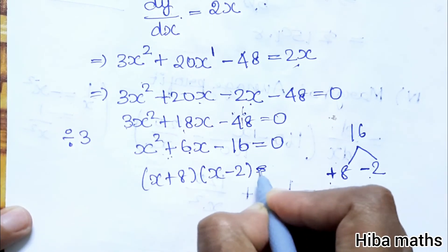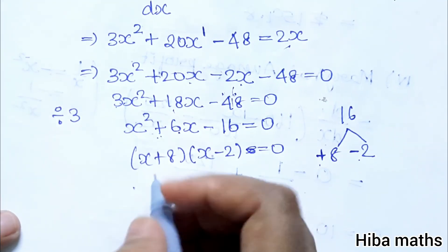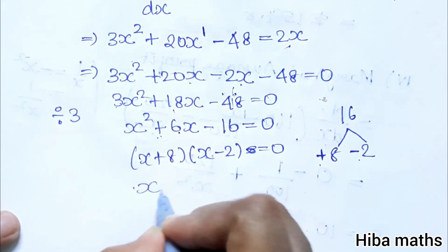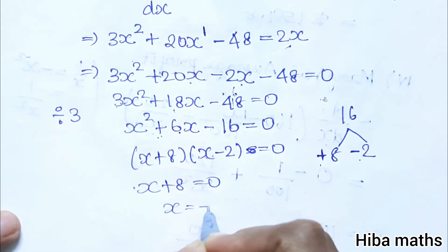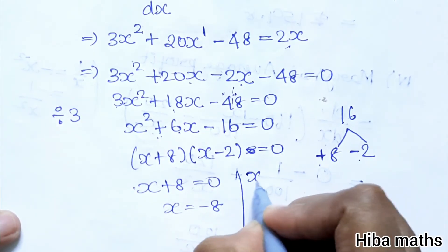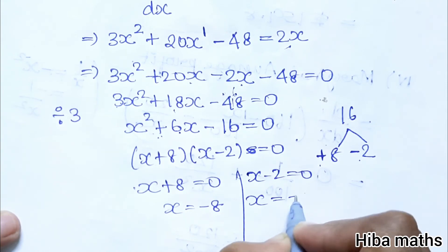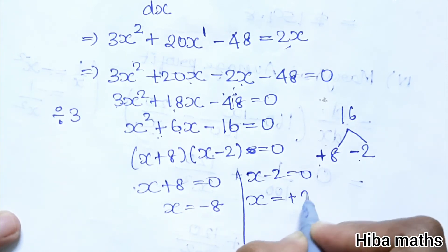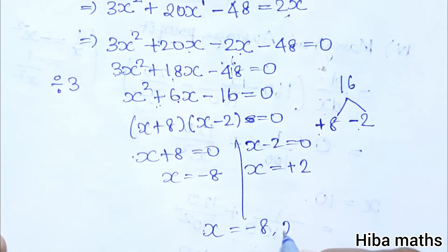Factoring: (X plus 8)(X minus 2) equals 0, so X equals minus 8 or X equals 2. These are the two values of X. Thank you so much for watching.